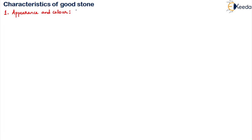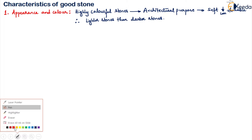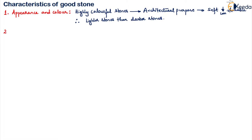There are 16 important characteristics. The first one is appearance and color. Highly colored stones are normally used for architectural purposes, but the problem is these stones are very soft. Therefore we have to go for lighter stones rather than darker stones, because lighter stones are stronger.